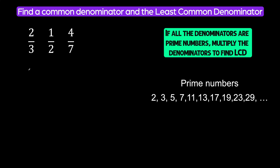We have three fractions: two-thirds, one-half, and four-sevenths. Our denominators are three, two, and seven. To find a common denominator, you are going to just multiply your denominators. Three times two times seven, and it's going to be forty-two.